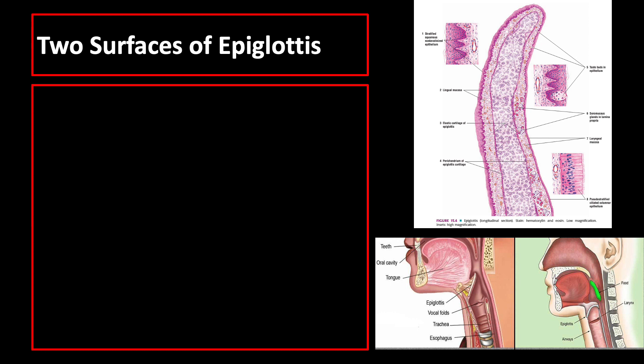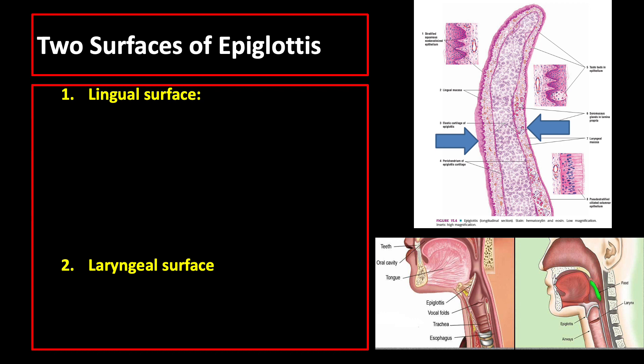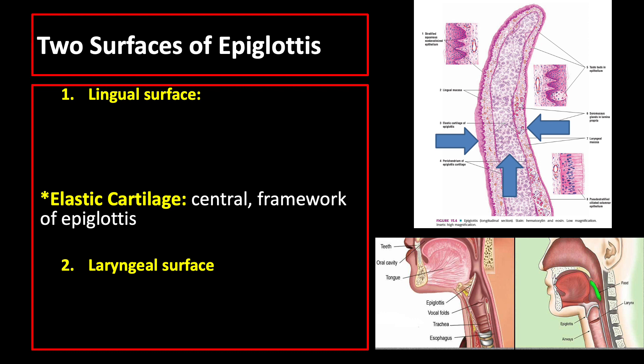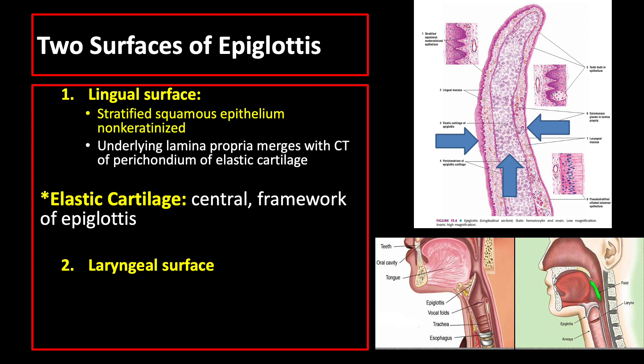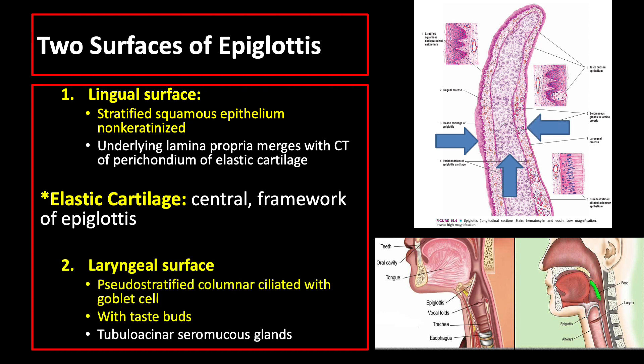The two surfaces of the epiglottis are the lingual surface, which faces the tongue, and the laryngeal surface, which faces the larynx. Central to both surfaces is an elastic cartilage that serves as the framework of the epiglottis. The lingual surface is lined by stratified squamous non-keratinized epithelium since it is in constant contact with swallowed food, while the laryngeal surface is lined by pseudostratified columnar ciliated epithelium with goblet cells.